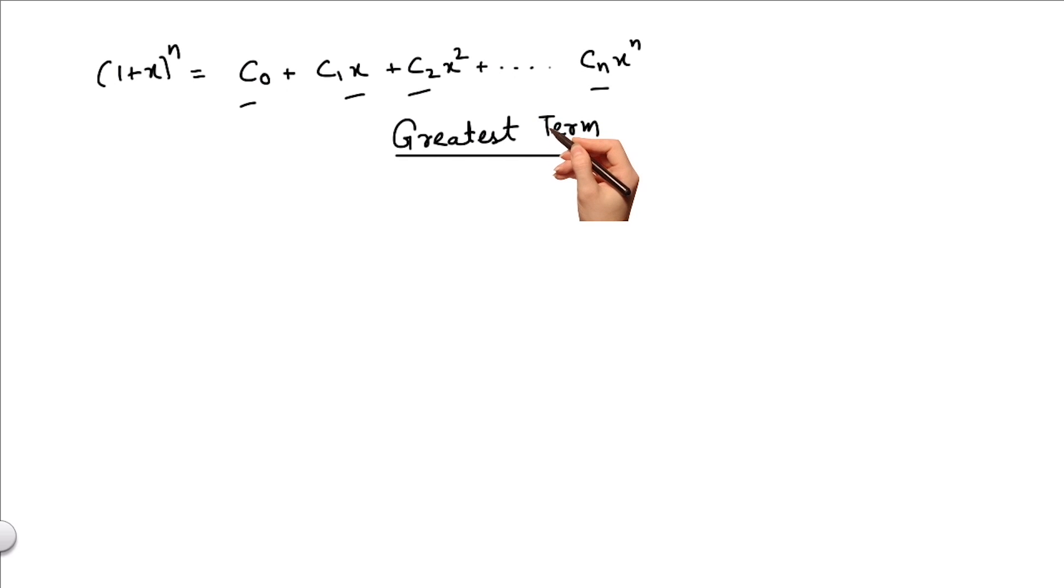To achieve that, we follow a very simple algorithm and it can be outlined in the following steps. Step 1: we find out the value of m which is given by |x| × (n+1) / (x+1).